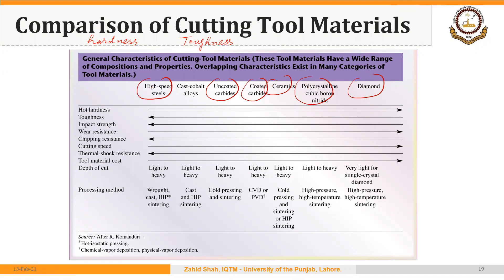To better understand this diagram and the ones on the following slides, two key properties will help you understand the comparison: hardness and toughness. As we move from left to right — from high-speed steel to uncoated carbides up to diamond — the hardness increases, and so does the wear resistance and the cutting speed.